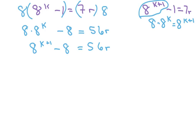Now, we want it to look like this piece, so what I'm going to do is subtract 7 from both sides. So, what we're going to do is 8 to the k plus 1 minus 1 equals 56r minus 7.